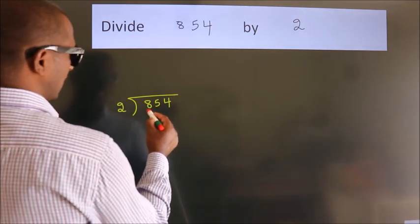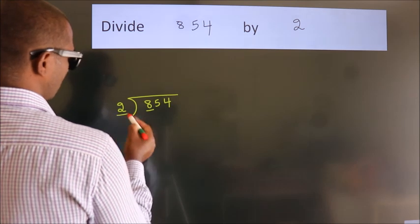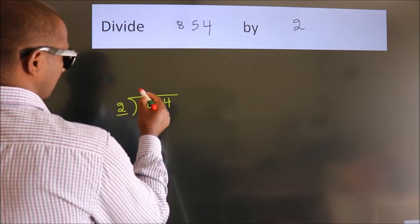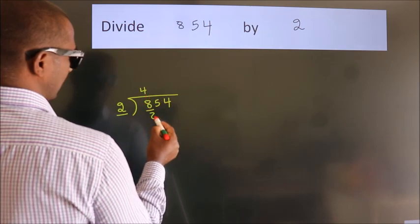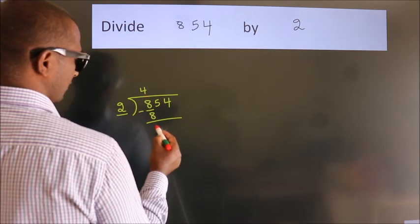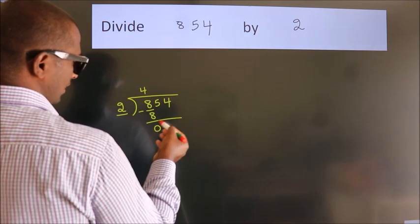Next, here we have 8, here 2. When do we get 8 in the 2 table? 2 fours, 8. Now we subtract. We get 0.